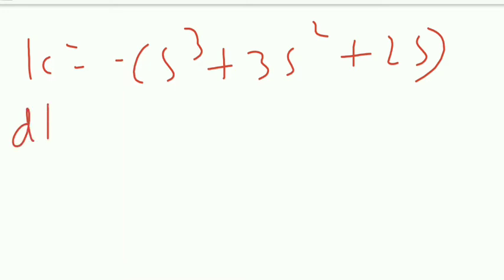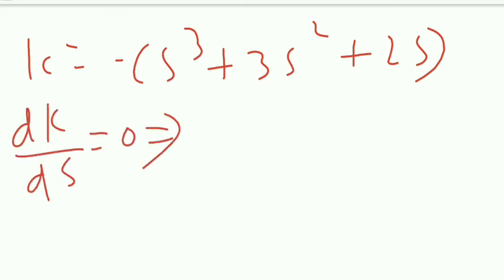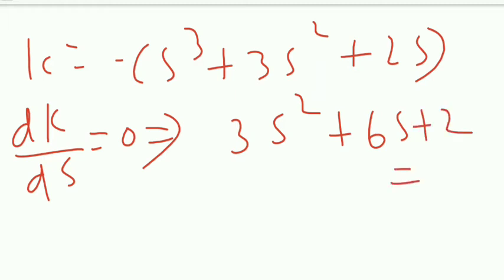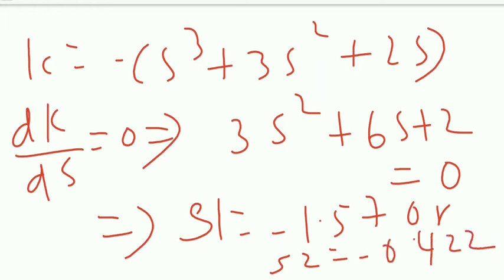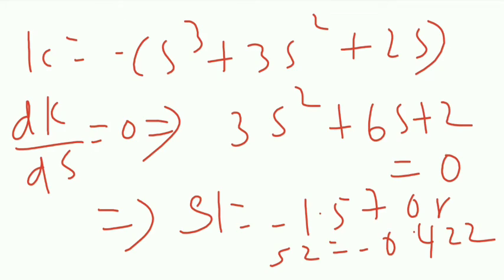Differentiate k with respect to s and set equal to zero: dk/ds = −(3s² + 6s + 2) = 0. Solving this quadratic gives two roots: s₁ = −1.57 and s₂ = −0.422. We now check which point lies on the root locus branch.